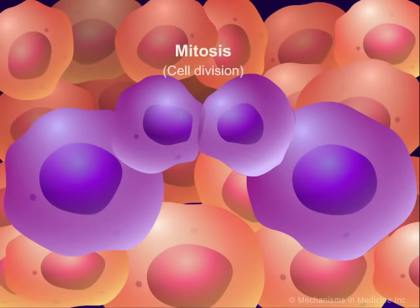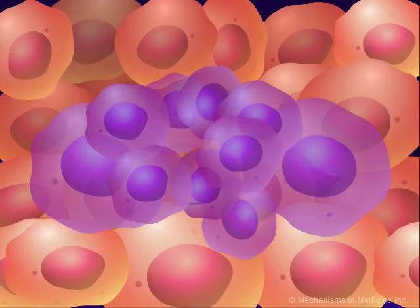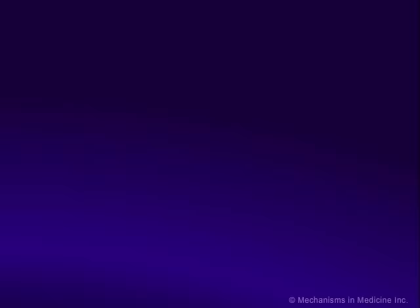One tumor cell becomes two. If mitosis continues, two tumor cells become four, with exponential growth potential. On the tissue level, this leads to increased tumor growth and increased tumor size.